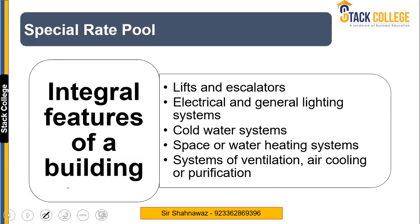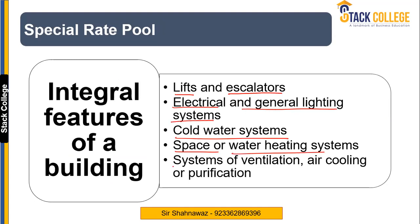Integral features of a building include any plant or machinery which is part of the building, such as lifts, escalators, electrical and general lighting systems, cold water systems, space or water heating systems, and systems of ventilation, cooling, or purification. All these kinds of plant and machinery fall under the special rate pool.